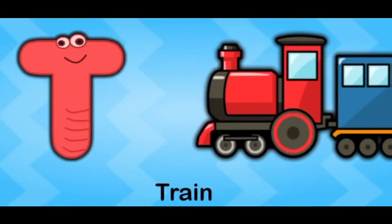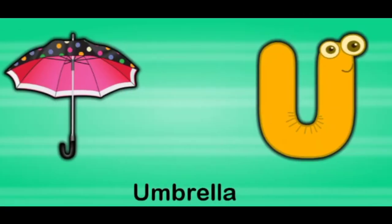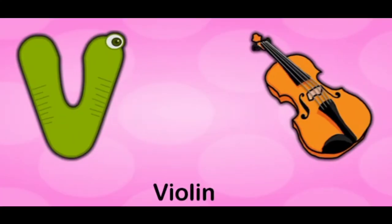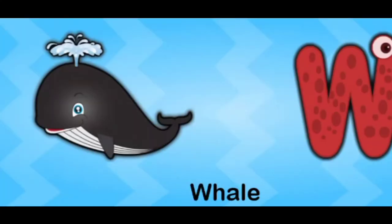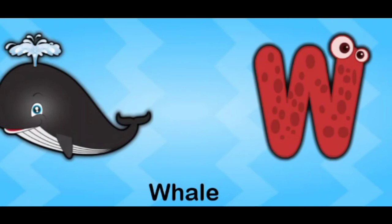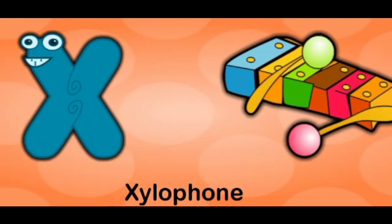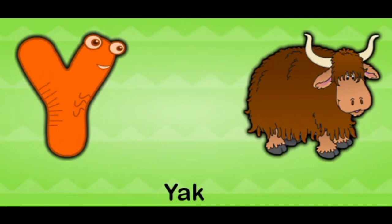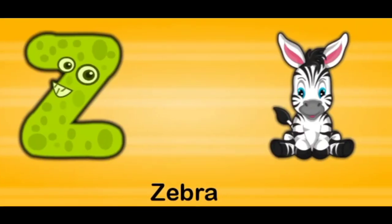S for sun, T for train, U for umbrella, V for violin, W for whale, X for xylophone, Y for yak, Z for zebra.